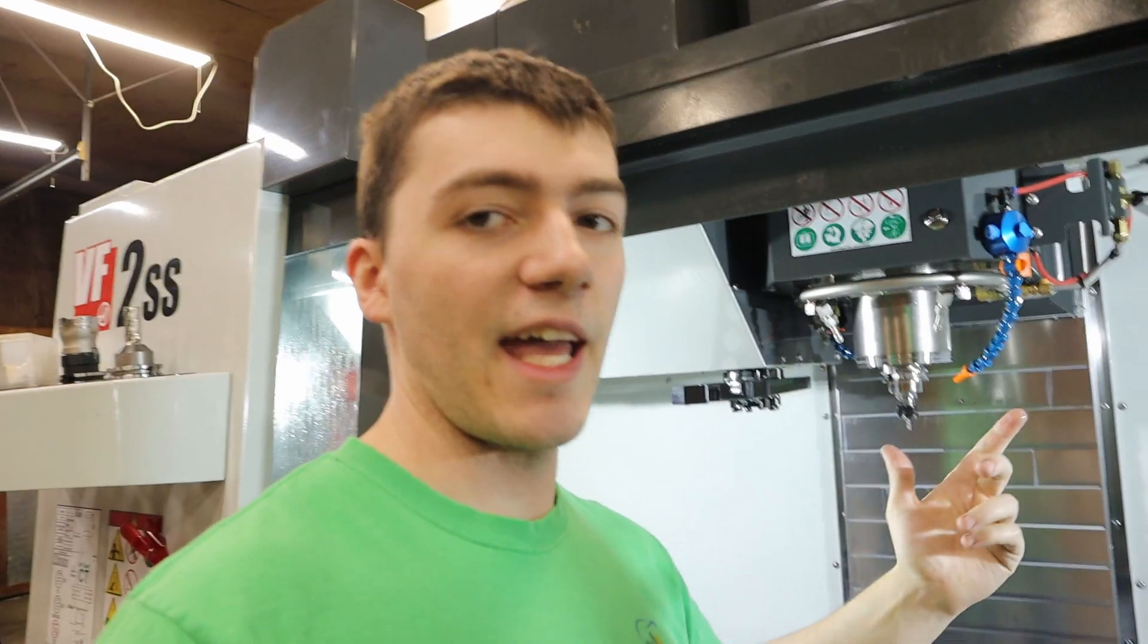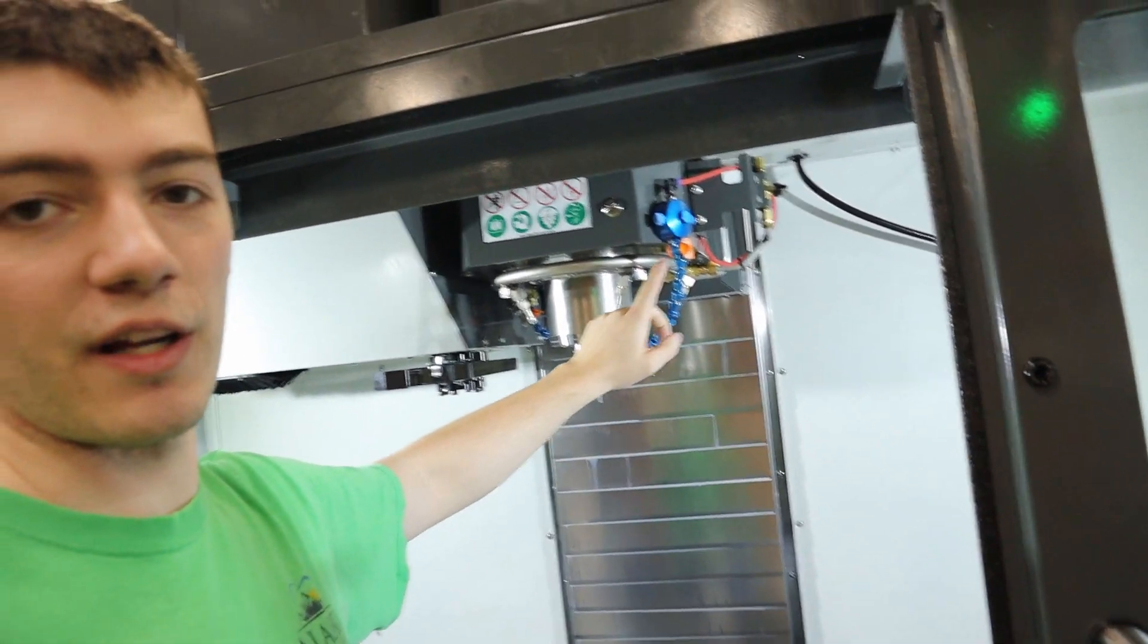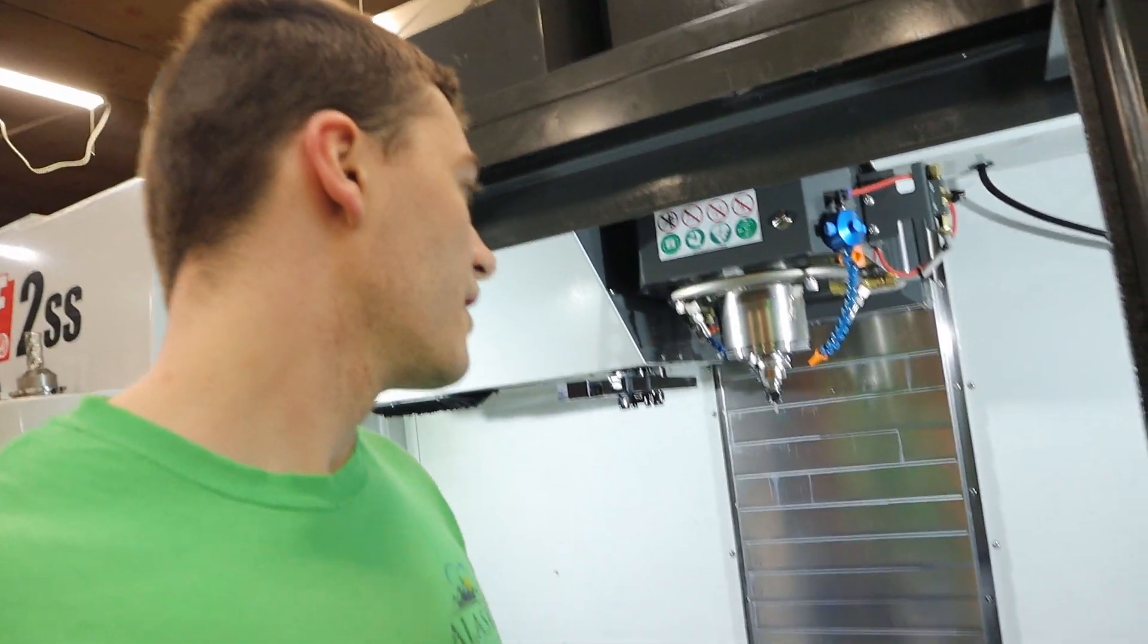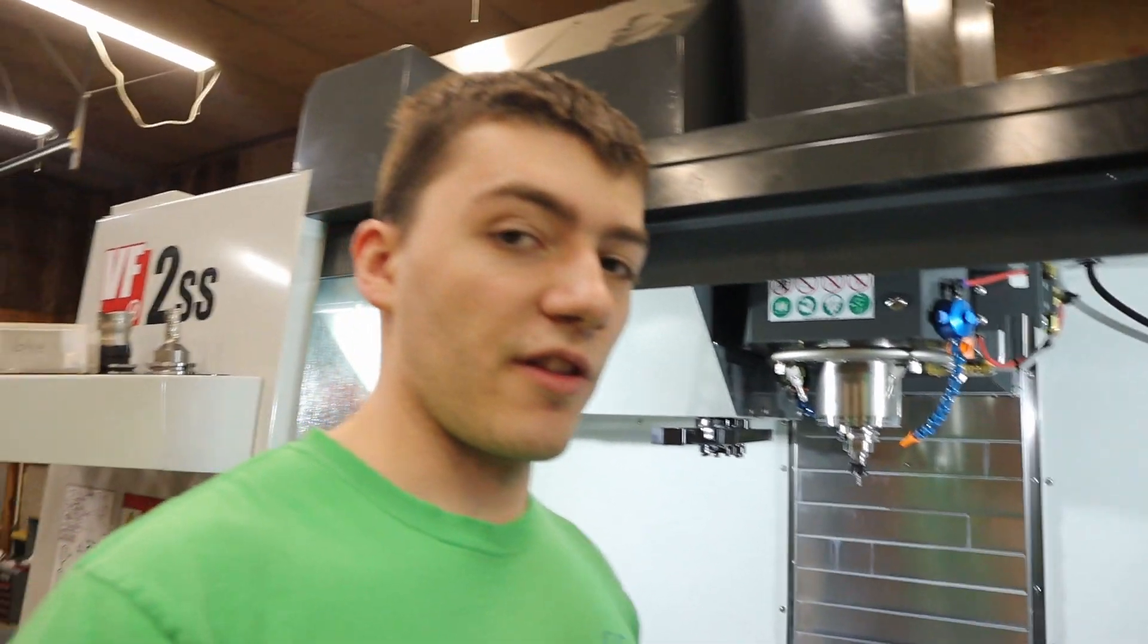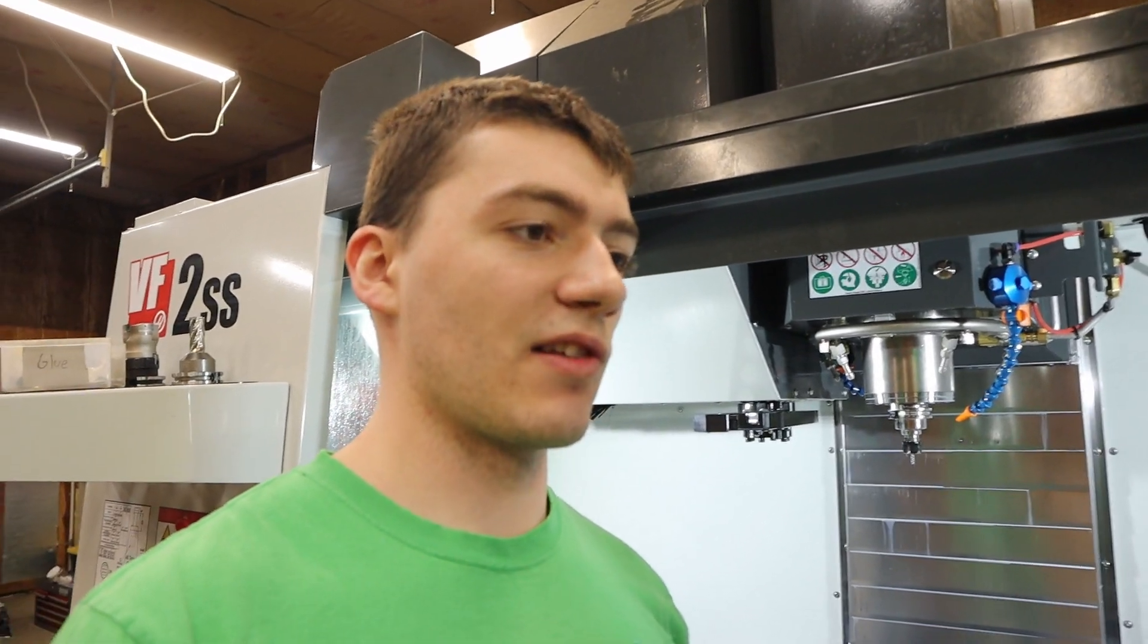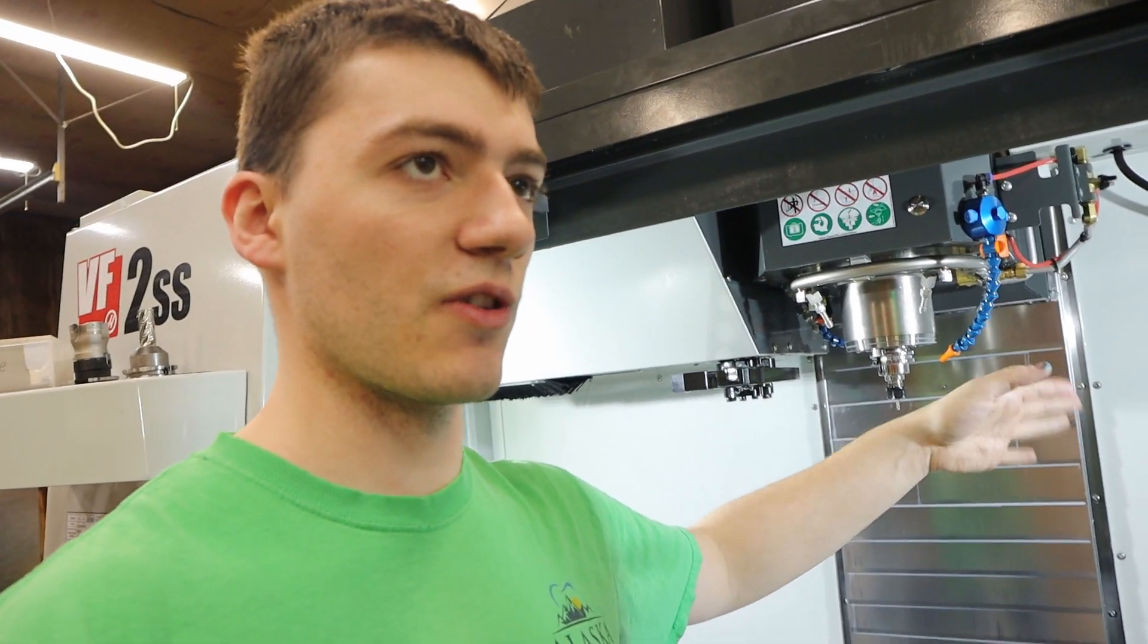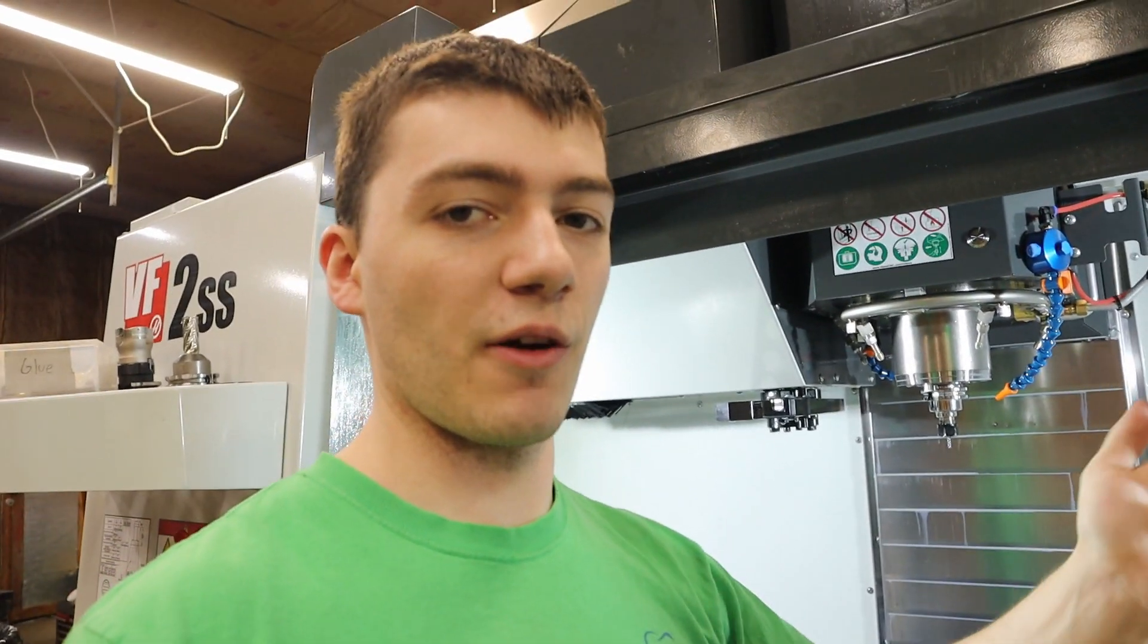You need a compressor that can handle both that and replenishing the tank as this gets drained from using 90 psi constantly. Other than that, it's a super easy install. I think between, I bought Haas parts, the solenoid and the fittings, which is kind of silly because you really don't need to.